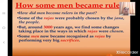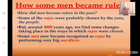Now let us revise the first topic: how some men became rulers. How did men become rulers in the past? Some of the rajas were probably chosen by the jana, that means by the people. But around 3000 years ago, we find some changes taking place in the ways in which rajas were chosen. Some men now became recognized as rajas by performing very big sacrifices.